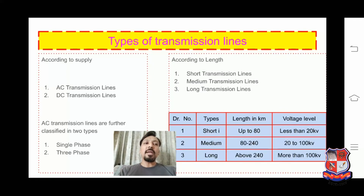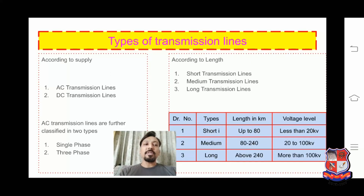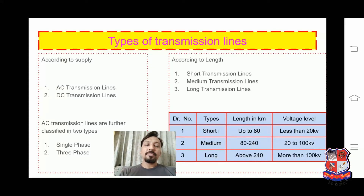As far as the length of the transmission line is concerned, it is broadly classified into three different categories: short transmission line, medium transmission line, and long transmission line. If the length is up to 80 km, it is referred to as a short transmission line. The medium transmission line length is from about 80 km to 240 km, and the long transmission line length is 240 km or above.